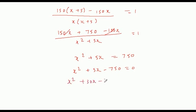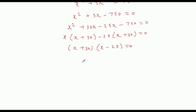Factor this: x square plus 30 x minus 25 x minus 750 equal to zero. x times (x plus 30) minus 25 times (x plus 30) equal to zero. (x plus 30)(x minus 25) equal to 0.